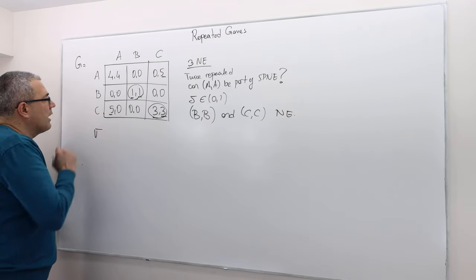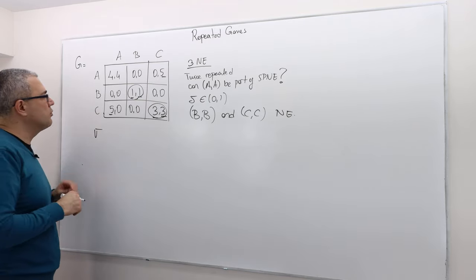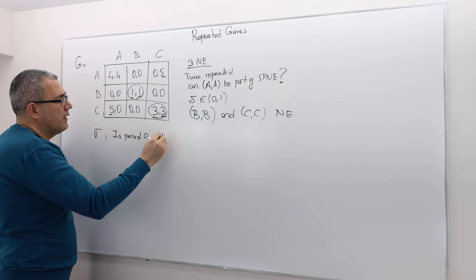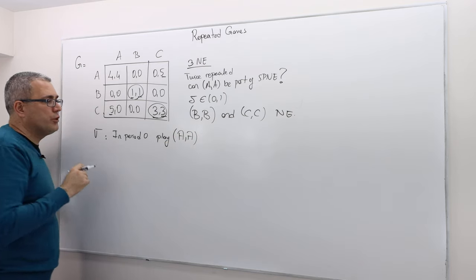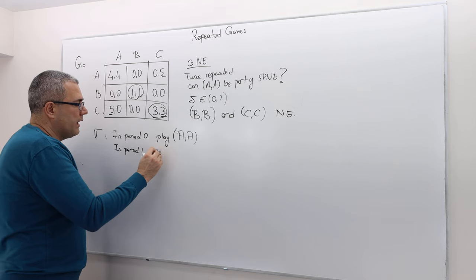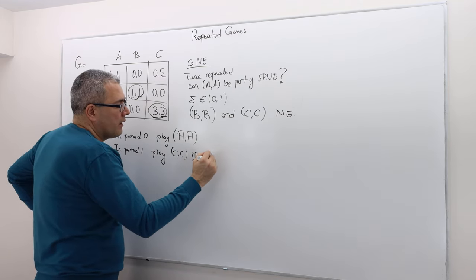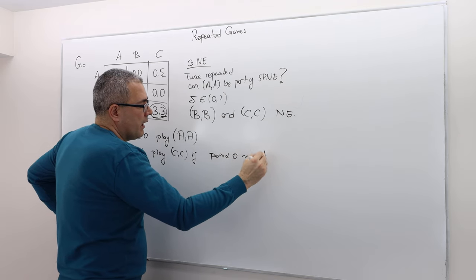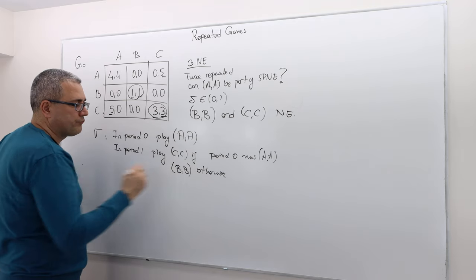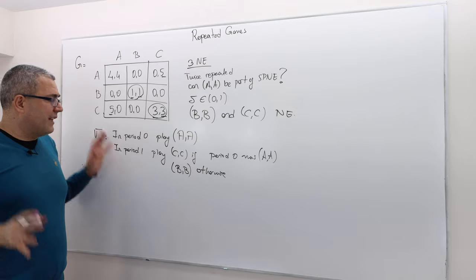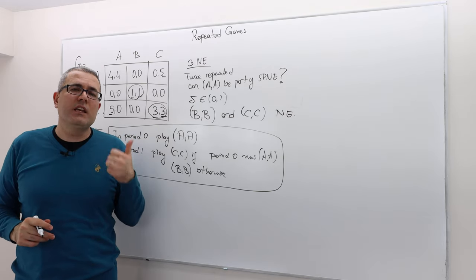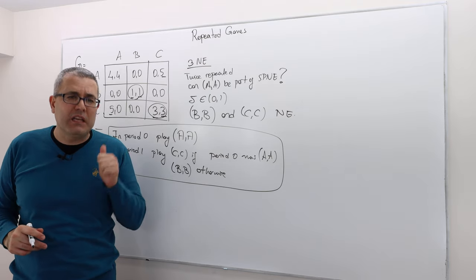Here is the strategy profile. In period zero, play AA — player one chooses A, player two chooses A. In period one, play CC if period zero was AA; otherwise, play BB. That's a complete strategy profile. This strategy profile tells what each player is going to do after every possible history in this game.